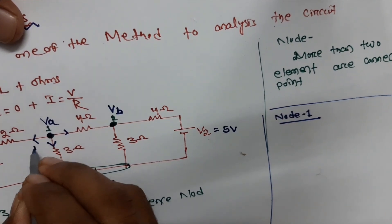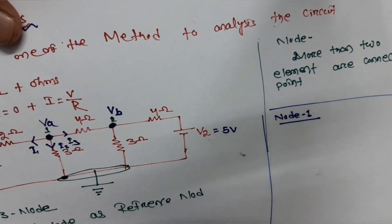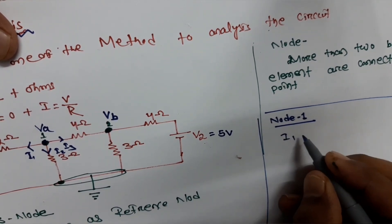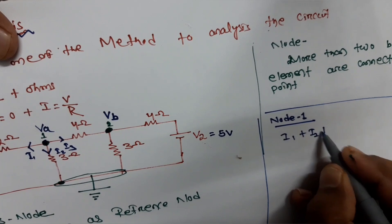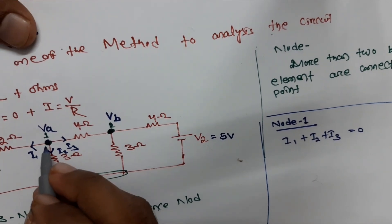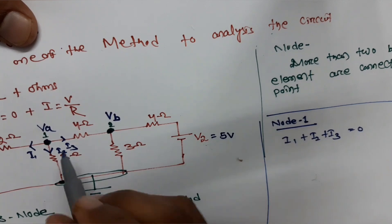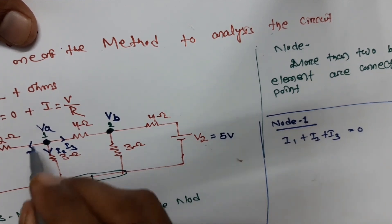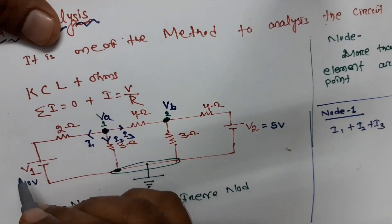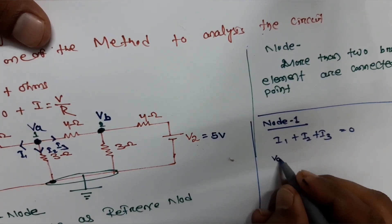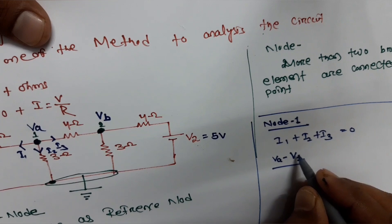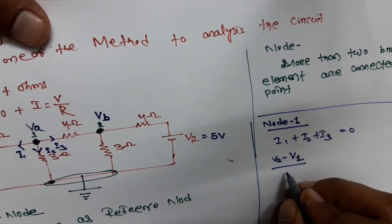Let this be i1, this be i2, and this be i3. Applying KCL: i1 + i2 + i3 = 0. Applying Ohm's law: i1 equals Va minus V1, because Va is the higher potential, so Va minus V1 divided by 2 ohm.